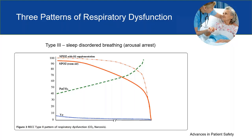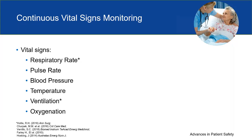The third type is the pattern seen with sleep-disordered breathing. It looks similar to opioid-induced respiratory depression but occurs repeatedly, and as the night goes on it usually gets worse. With a good arousal threshold, patients will wake themselves to breathe. But in the setting of central nervous system depressants — commonly used in the hospital — the arousal threshold will be less sensitive and the patient can exhibit full arrest. As you can see from the three patterns, oxygenation is one of the later signs of respiratory distress, and the most sensitive measure of patient deterioration is ventilation status.